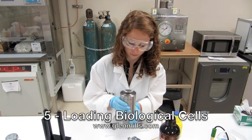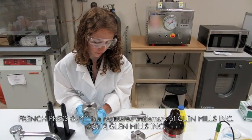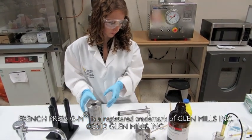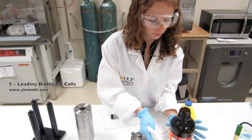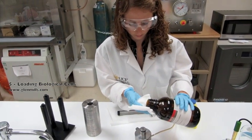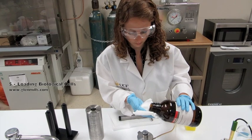Remove the closure plug from the cell body and lay aside for now. Lubricate the piston's O-rings with water, silicone, glycerol, or other acceptable materials to facilitate its movement into the cell body.